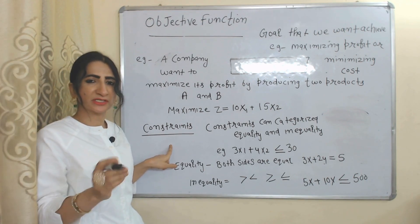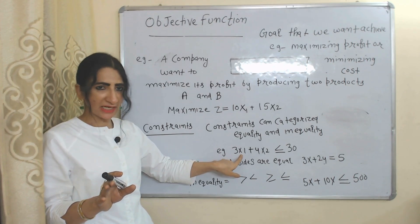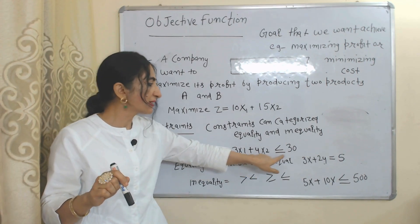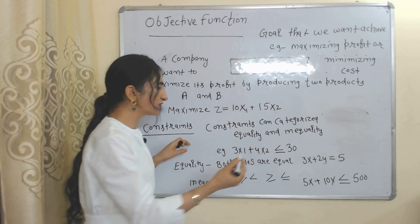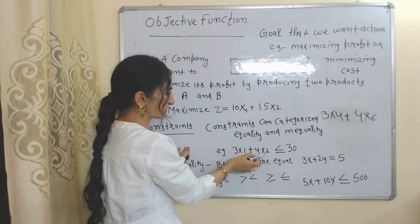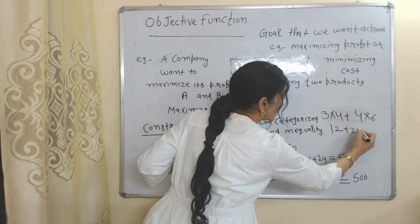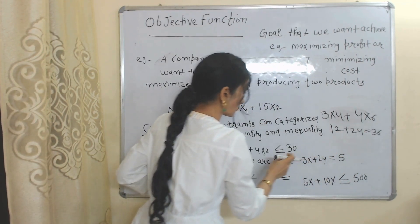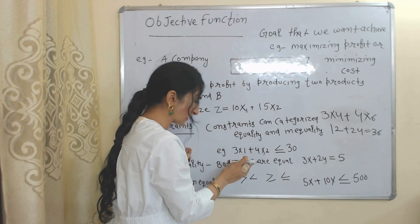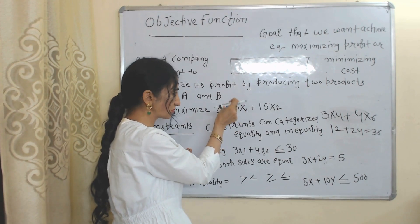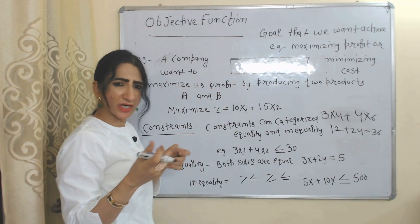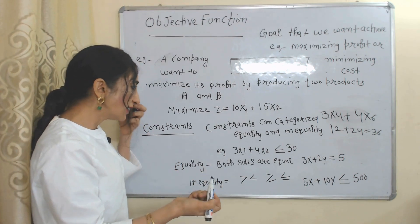Constraints are our limitations. For example, we have limited resources. In order to produce product A we need 3 units of resources, and to manufacture product B we need 4 units of resources, but resources are not available for more than 30 units. This will be called our constraint — our limitation. Within these limitations we have to maximize our objective, our profit.